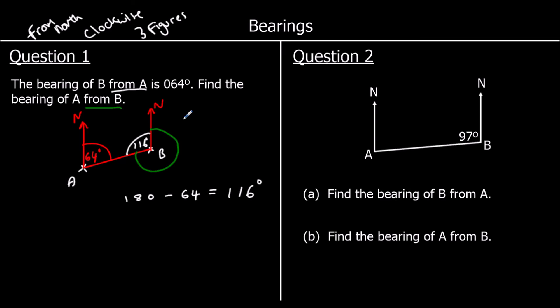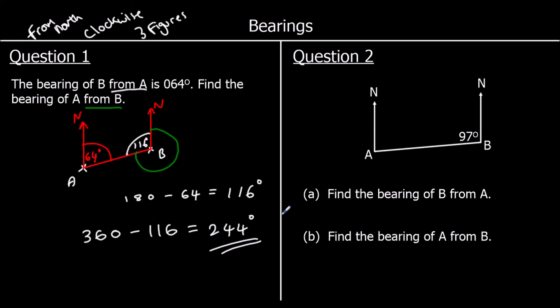Then we can say angles around the point add up to 360. So 360 take away 116 is 244 degrees. So that's our answer — that is the bearing of A from B, measured from north in a clockwise direction.